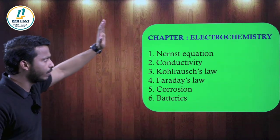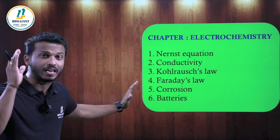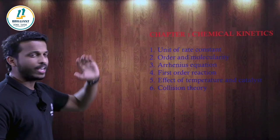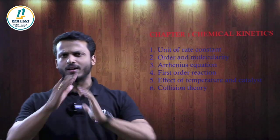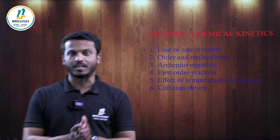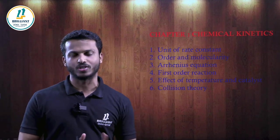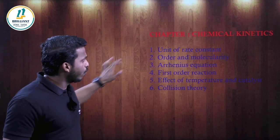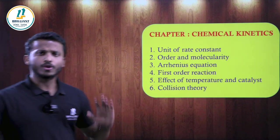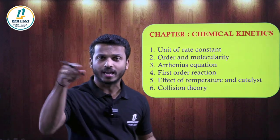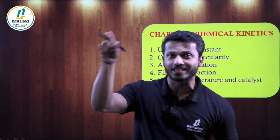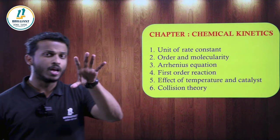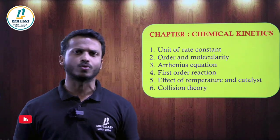These are the main important concepts in Electrochemistry — concentrate on these points. Now the next highly important chapter in physical chemistry: Chemical Kinetics, dealing with the rate and speed of a reaction. The first question you can expect is the unit of rate constant k: mol^(1−n) · L^(n−1) · s^(−1). A unit-related MCQ question can be expected.